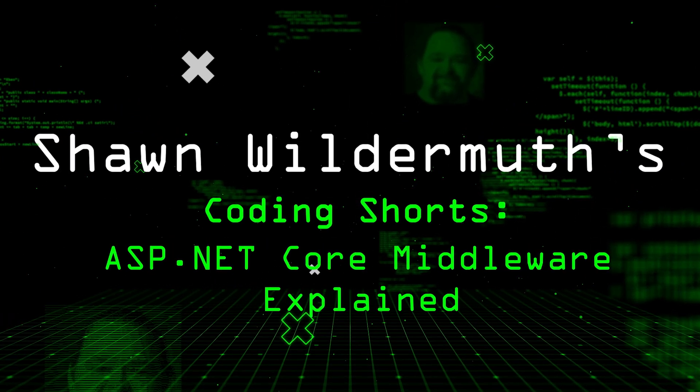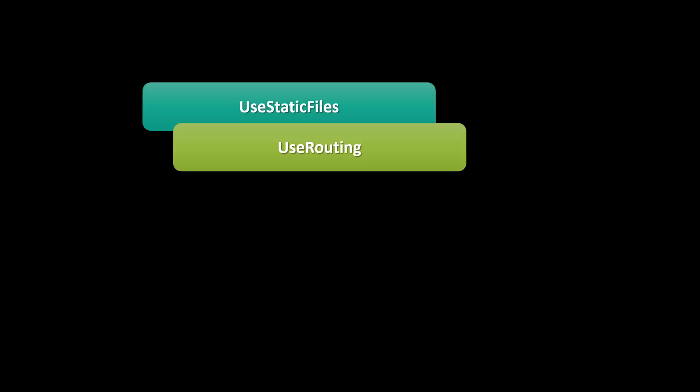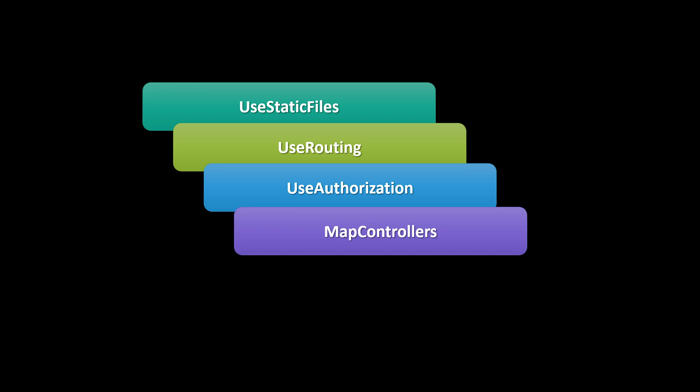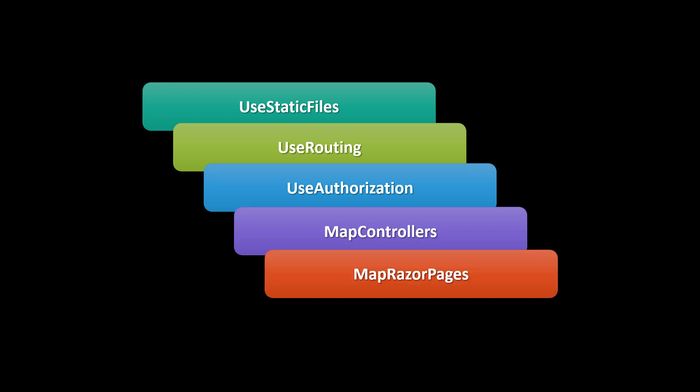In today's episode, I'm going to be talking about what middleware is, how it works, and how to write your own middleware. So before we dig into how to write your own middleware, let's talk about how the middleware actually works. If you've ever created a brand new ASP.NET Core project, you'll see that middleware is being registered — static files, routing, authorization, maybe mapping controllers or Razor pages. Each one of these is actually a piece of middleware.